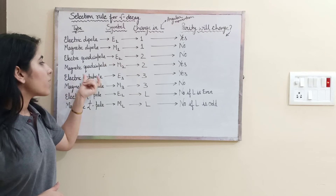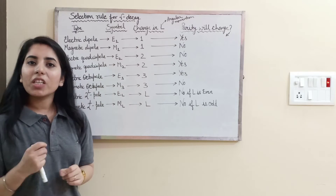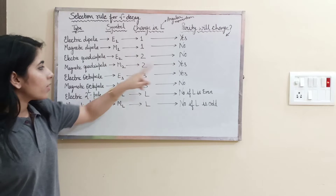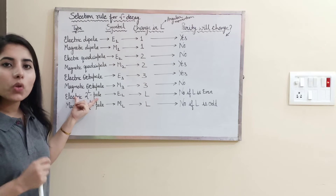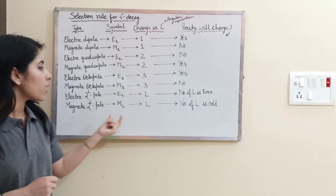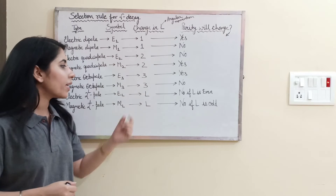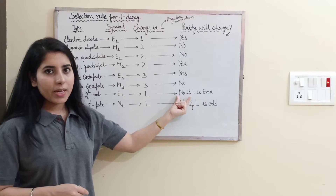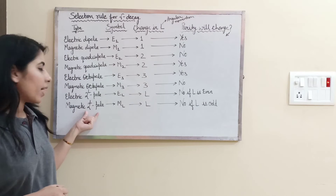For electric octopole and magnetic octopole, the symbols are E3 and M3. The change in angular momentum is 3. For E3 the parity changes, but for M3 it does not. For electric 2-to-the-power-L pole the symbol is EL, and for the magnetic case it is ML — L is the suffix. Change in angular momentum is taken as L. If L is even, there is no parity change; if L is odd, there is no parity change in the case of magnetic 2-to-the-power-L pole.